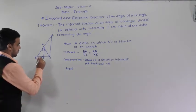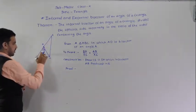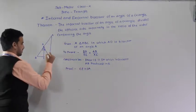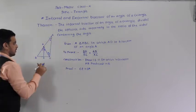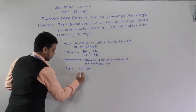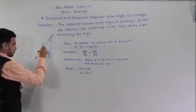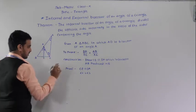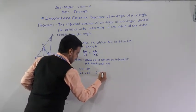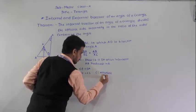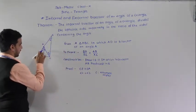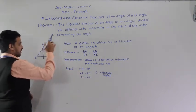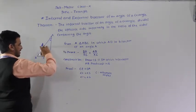For the proof, we draw CE parallel to DA. We give the angles names 3 and 4. Since CE is parallel to AD, angle 2 is equal to angle 3 because AD and CE are parallel lines and AC is a transversal — therefore angle 2 and angle 3 are alternate angles.